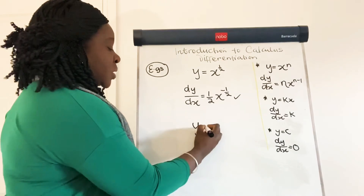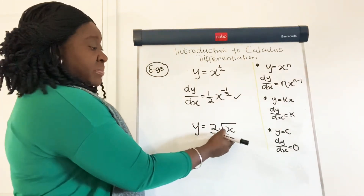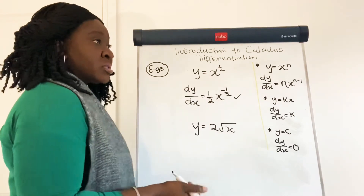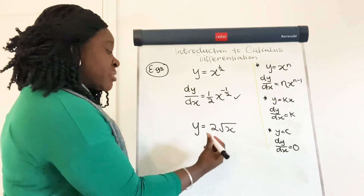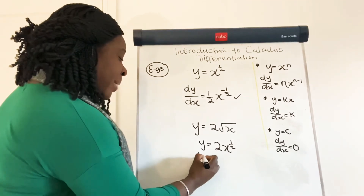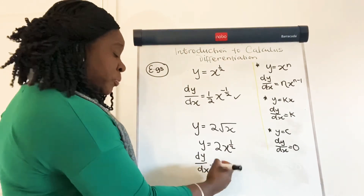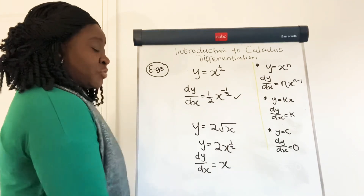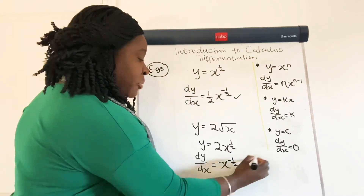Here's one with a root sign: y is equal to 2 times the square root of x. We know that roots are just another way to write fractional powers, and the square root of x would be the same thing as x raised to the power of a half. So we can rewrite that as y is equal to 2 times x to the power of a half. Then to find dy by dx, we multiply by the power: 2 times a half would be equal to 1, so I'll just write x. And half minus 1 would be minus a half, giving x to the power of minus a half.